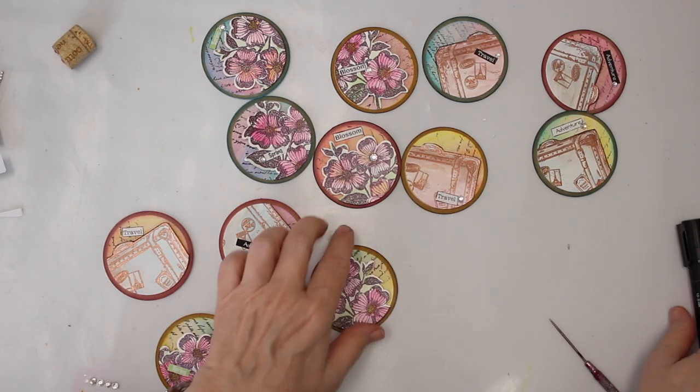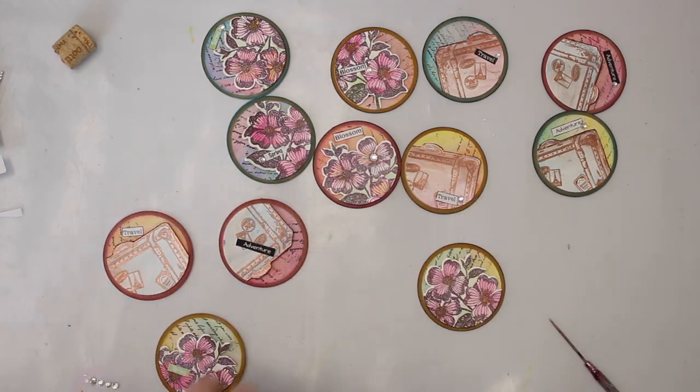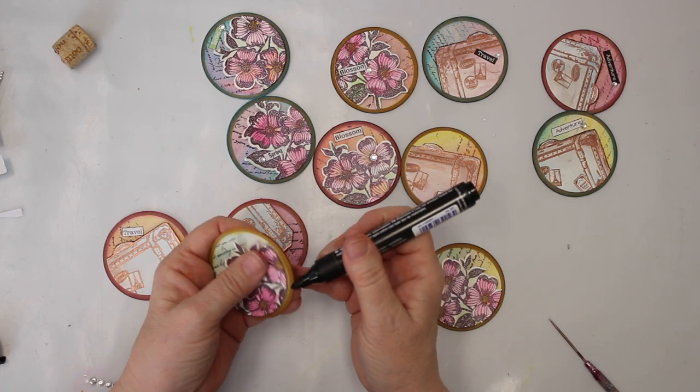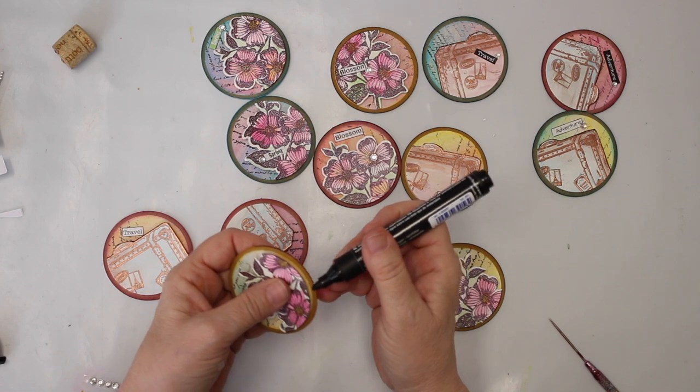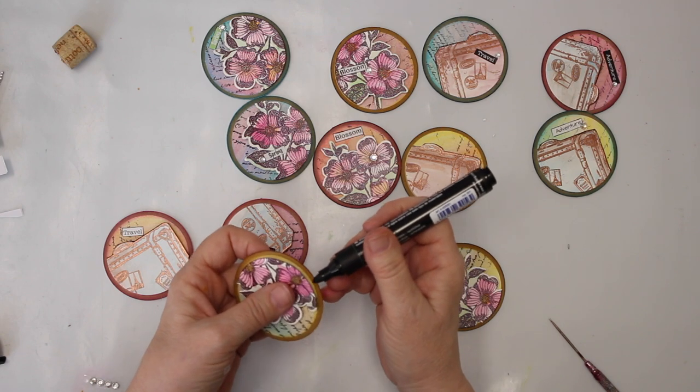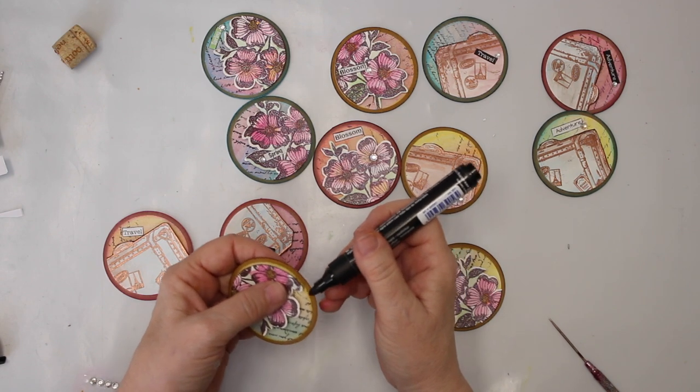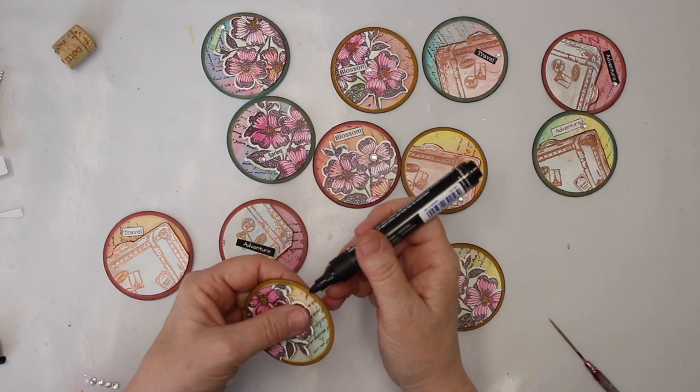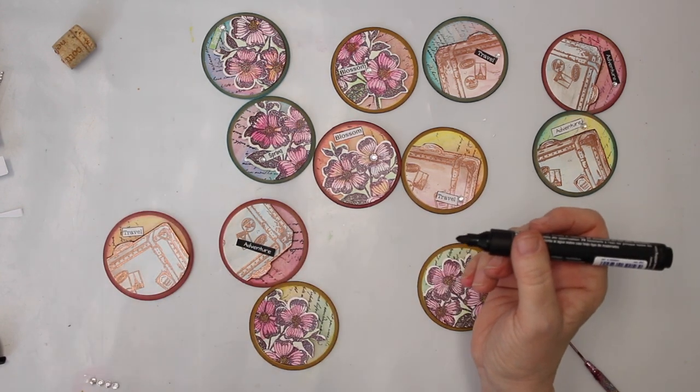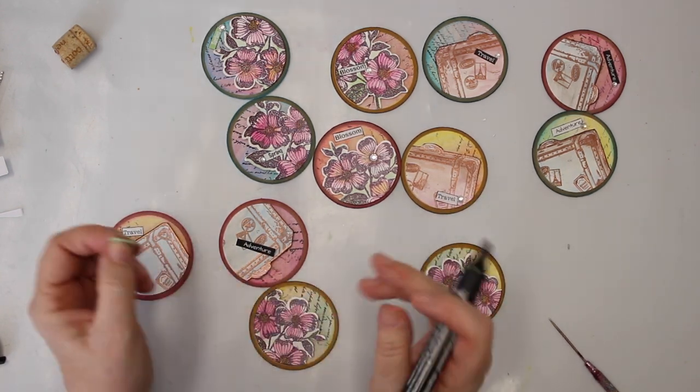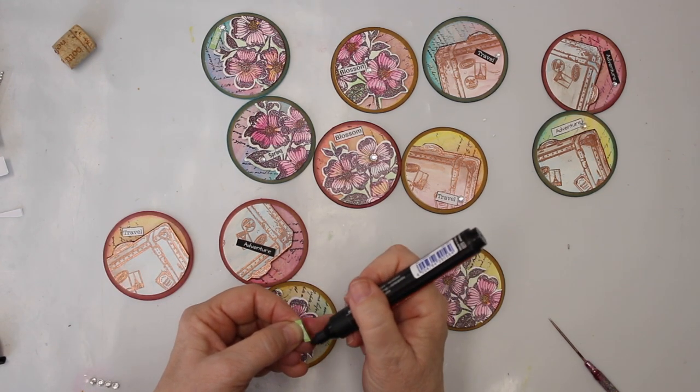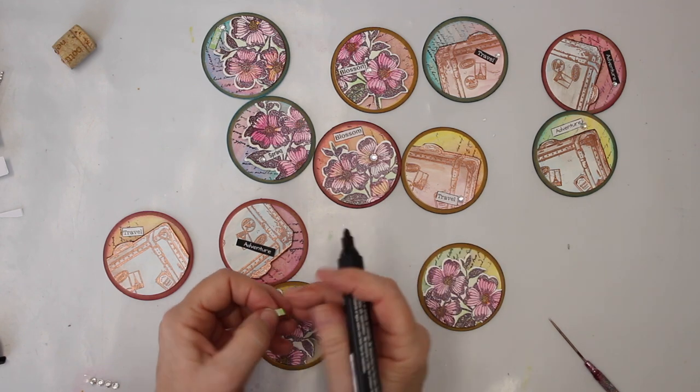So what I also did, I edged all the coins with the black marker, additionally to the distressing I did before. It just gives a little bit more definition. It's just something I like to do. It's totally optional if you don't want to do that. Just leave this step out. But I think it just makes such a difference. And I also go along the words when they are not black, just to make them stand out a little bit more and to finish them up. I know it's a tiny thing but I think it's worth it.